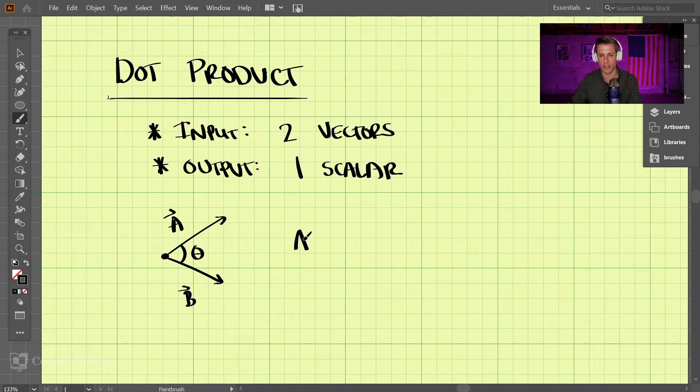A dot B equals the magnitude of A times the magnitude of B times the cosine of the angle between the two vectors—this theta here. So that is how we calculate the dot product if we're given two magnitudes and the angle between two vectors.